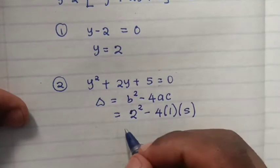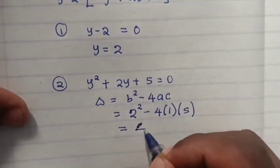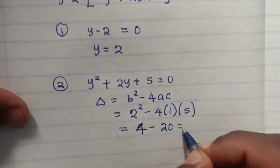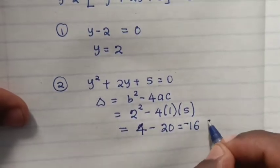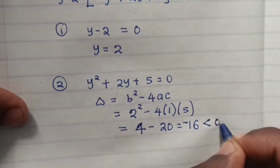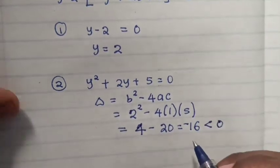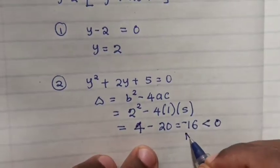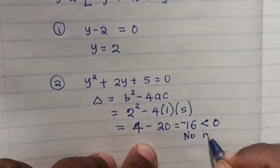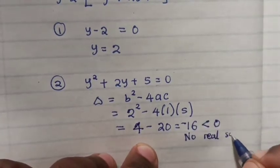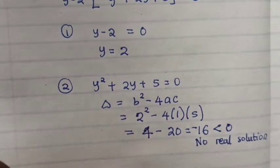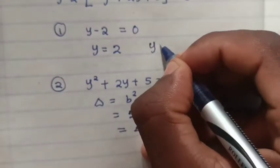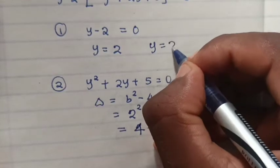C is 5, so here it will be 4 minus 20. So the answer is minus 16, which is less than 0. So there is no real solution for this second solution. So the solution will be y equals 2.